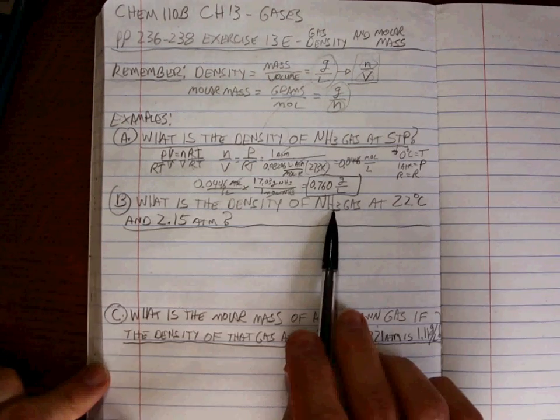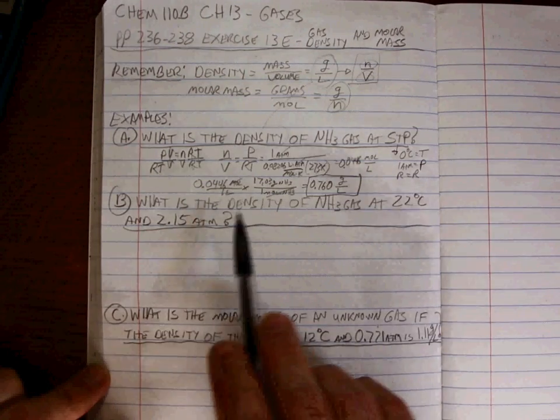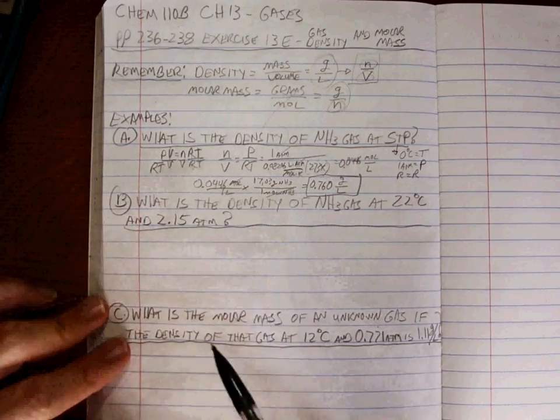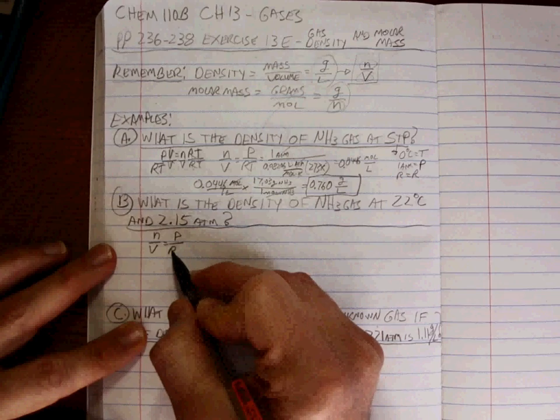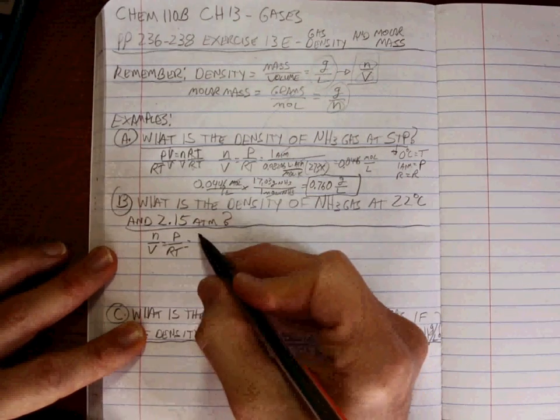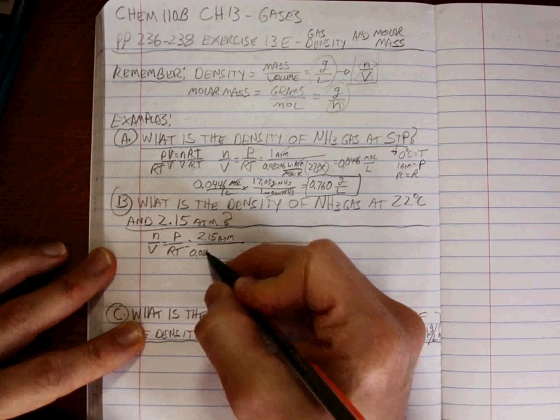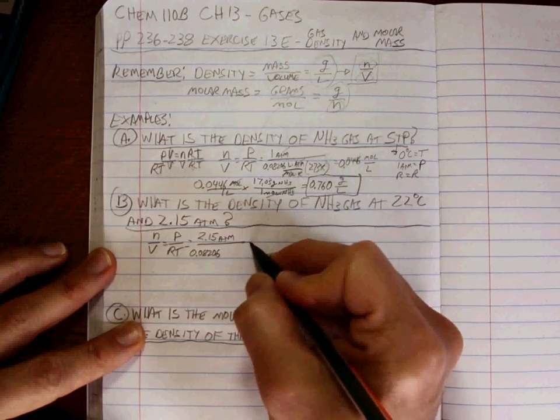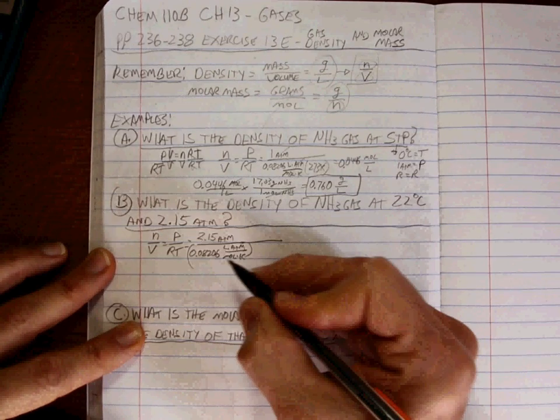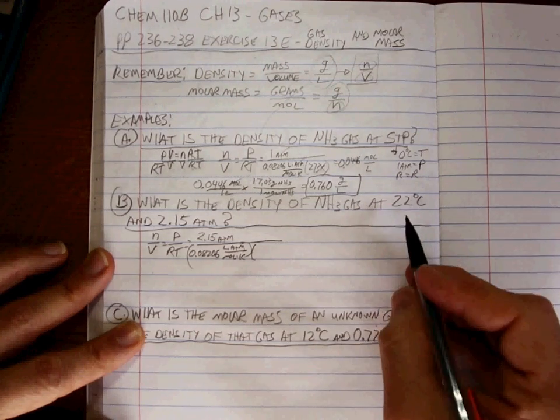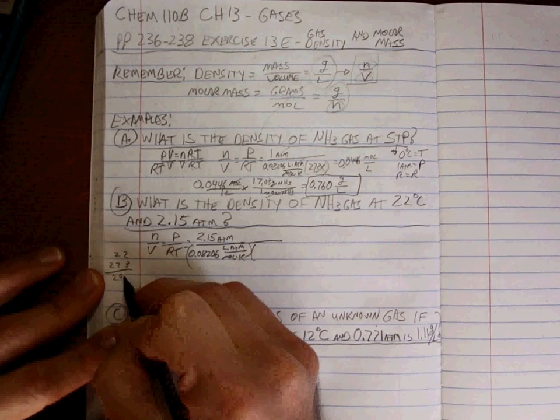Now, what's the density difference if the temperature is risen up to 22 and the pressure is essentially doubled? Go through the exact same process. N over V is equal to P over RT. This time, the pressure is 2.15 atm. R is again, 0.08206 liter atm per mole per kelvin. And the temperature is 22 plus 273 is 295.